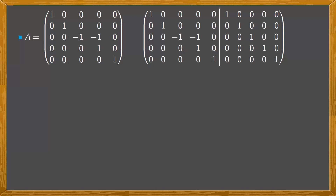Through elementary operations on the rows of this matrix, our objective will be to obtain the identity matrix in the first block. If this is possible, then the matrix we obtain in the second block will be the inverse matrix of A. If it's impossible, then this would show that A is not invertible and so has no inverse. Notice that in our case the task is simple — all the elements outside the diagonal of the matrix are 0 except this one, so we have to make this element 0.